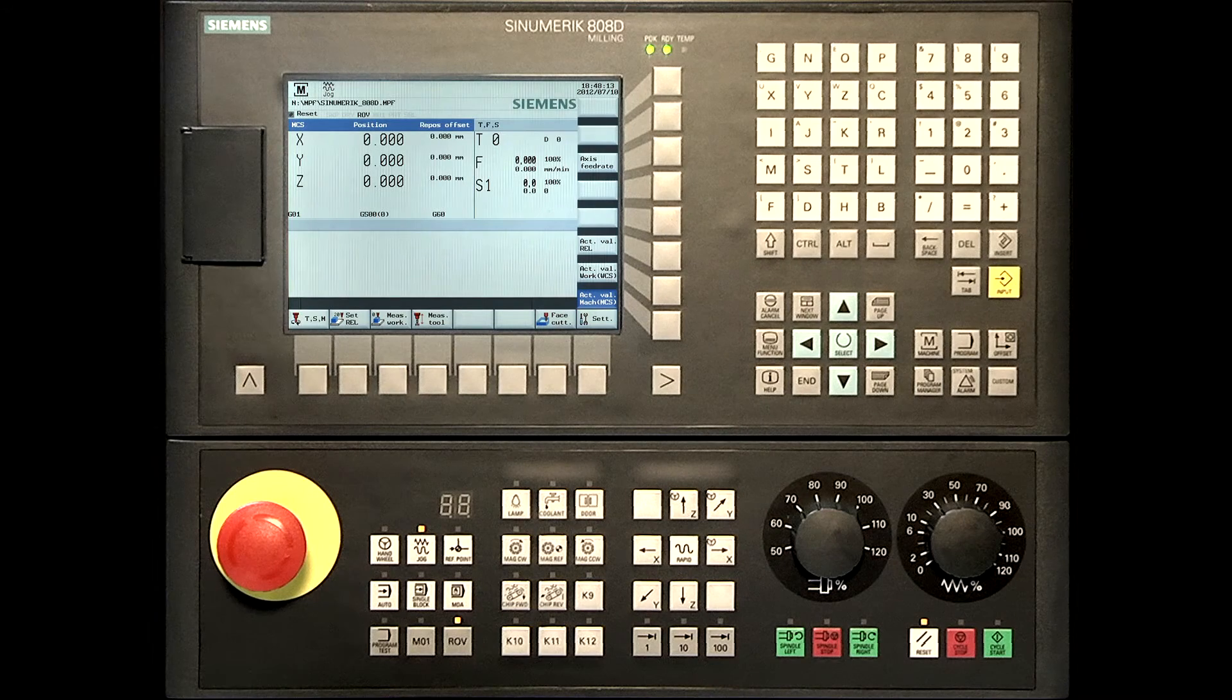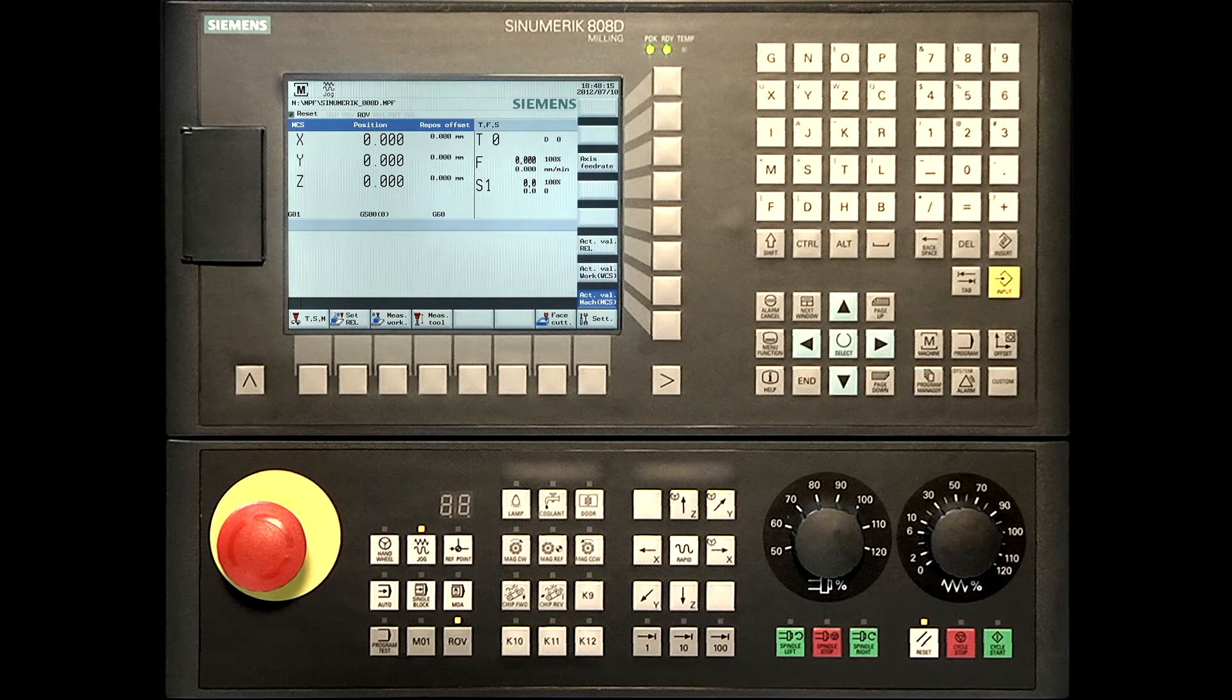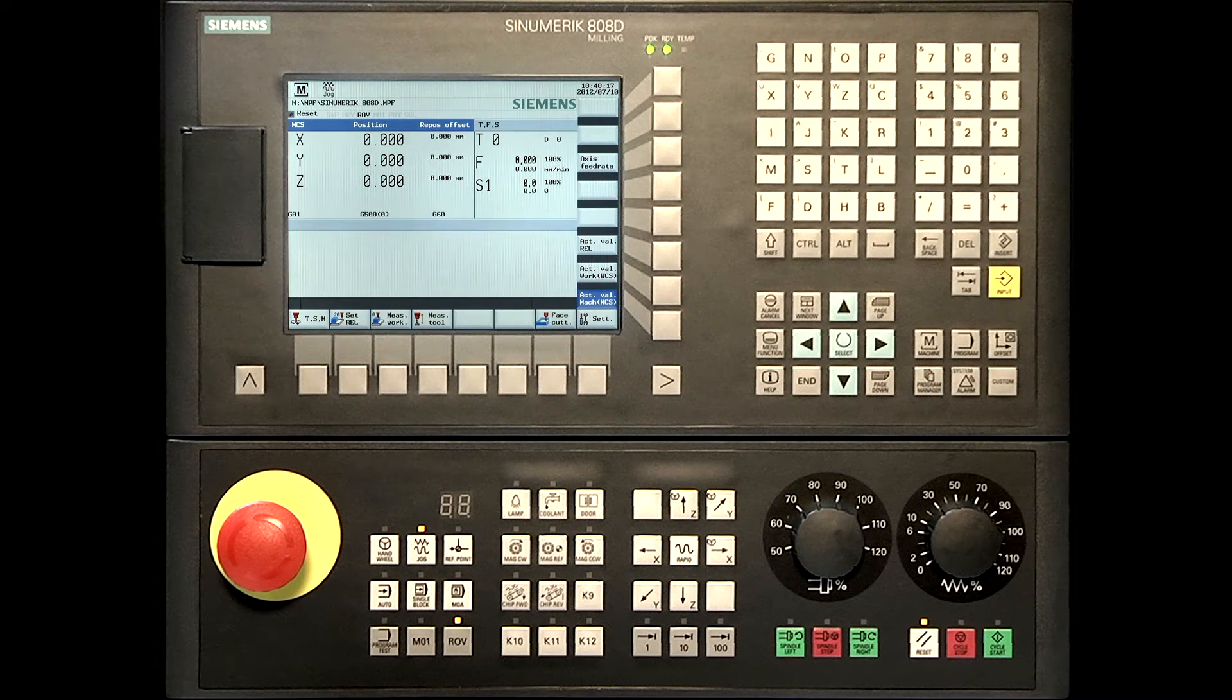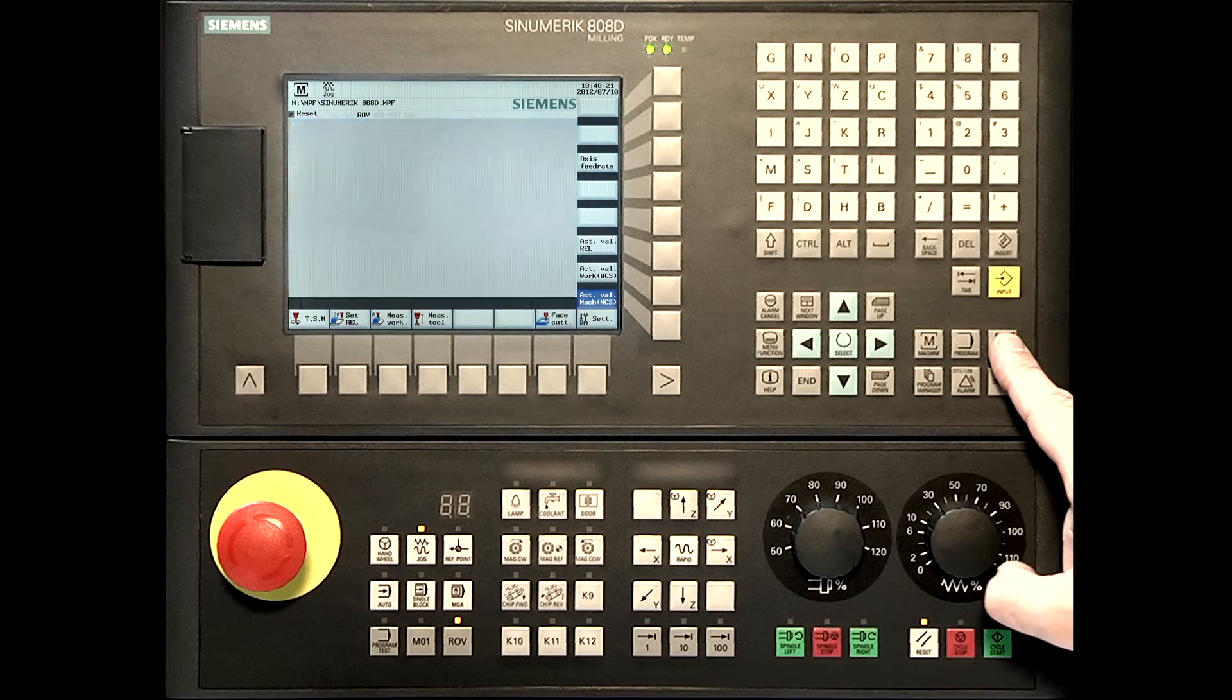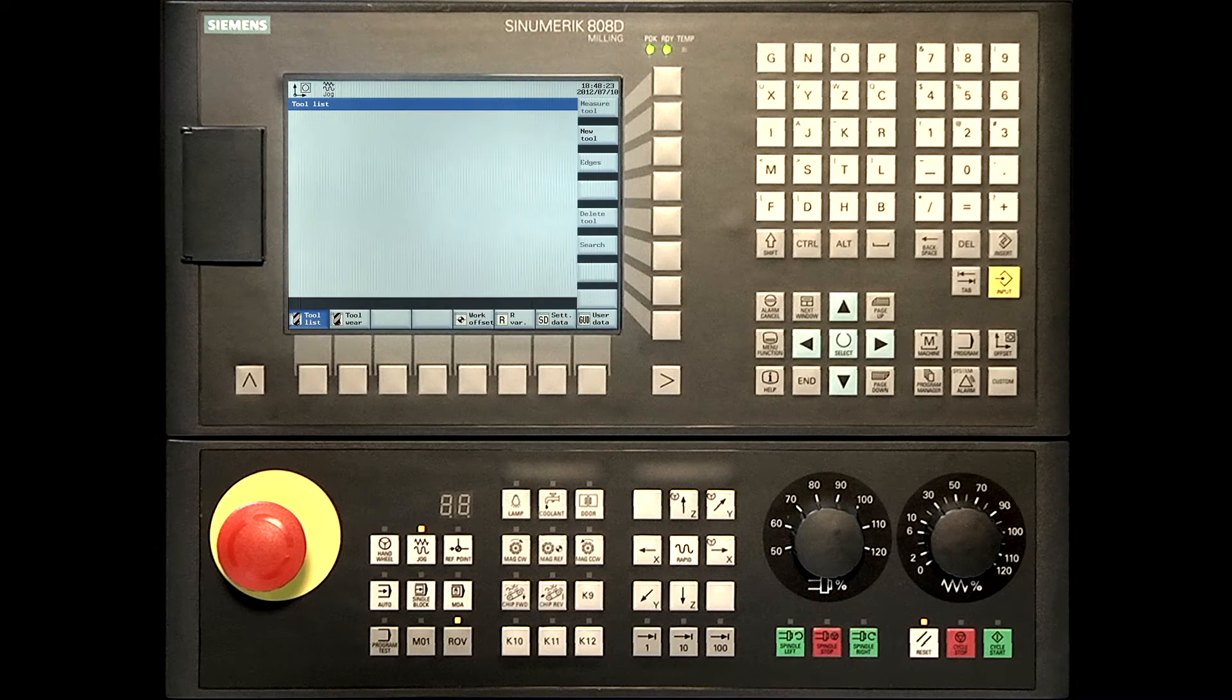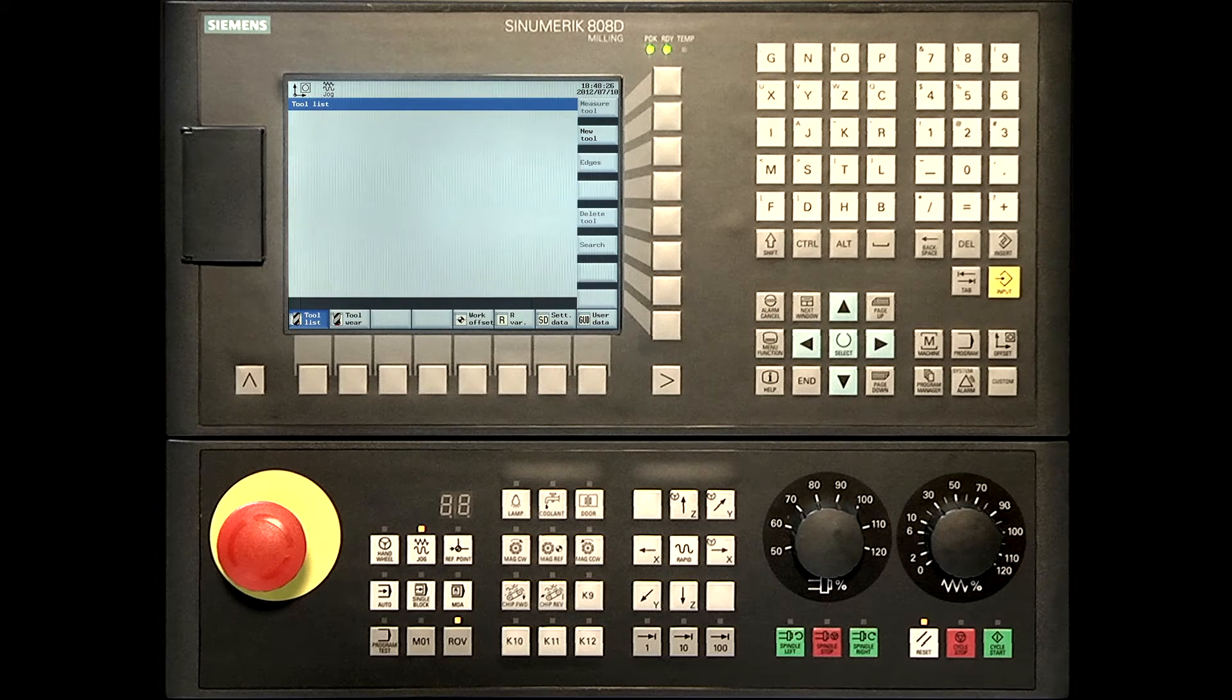Go into the tool list and create new tools for the workpiece. Press the offset area button on the controller. This will go directly to the tool list. Press the soft key new tool to create a tool.